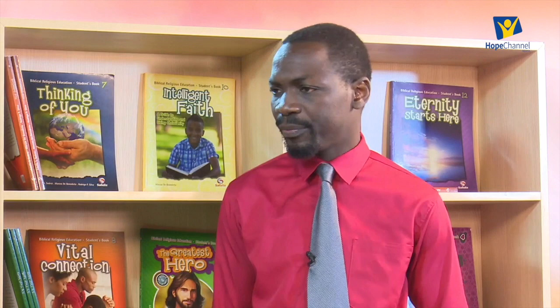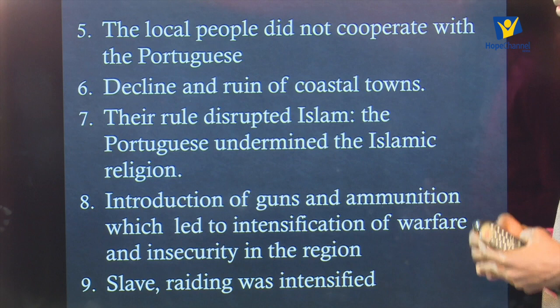Number six, there was also the decline and ruin of coastal towns. There were towns which were burnt down as a result of the way the Portuguese administered their rule — towns like Pate, Zanzibar, and Sofala. The Portuguese employed the scorched earth policy, and some old towns which were once flourishing, attracting investors and traders, were completely ruined. People no longer lived in those areas because the buildings and structures were destroyed.